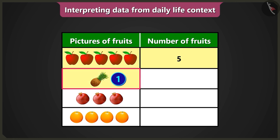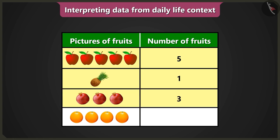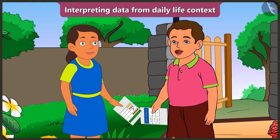Similarly, there is one picture of pineapple, so we have to write the number of pineapples — one — in the column of number of fruits. There are three pictures of pomegranates, so we have to write the number of pomegranates — three — in the column of number of fruits. There are four pictures of oranges, so we have to write the number of oranges — four — in the column of number of fruits.